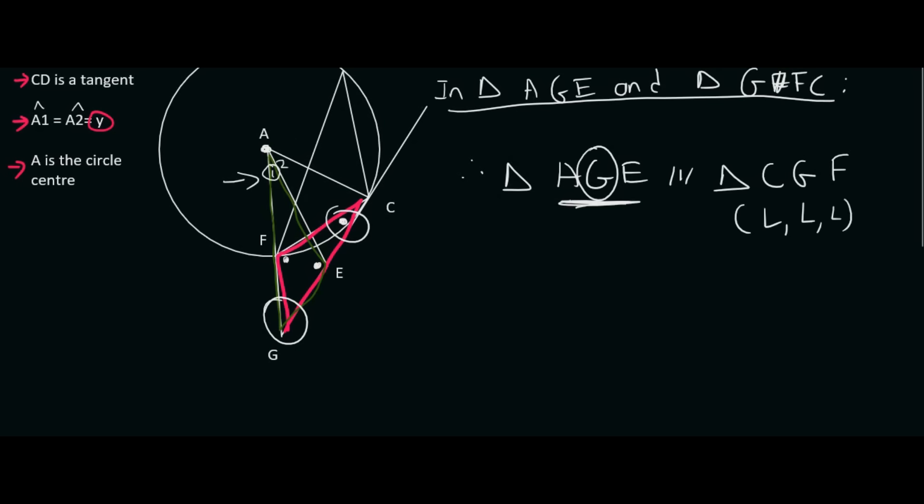Then we should always get into a good habit of writing out the ratios. So AG over CG is the same as GE over GF, which is the same as AE over CF. And the reason for this is that the corresponding sides are in proportion.